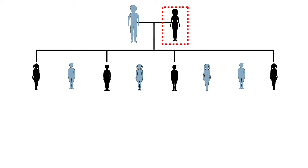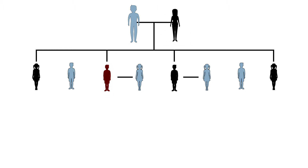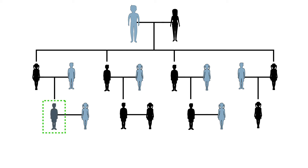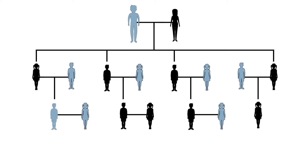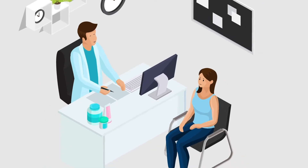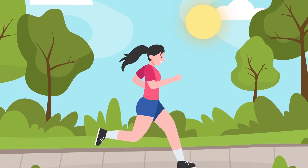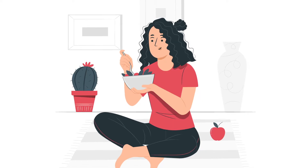If a person in your family has diabetes, you may be at an increased risk for it as well. A family history of certain health conditions can predispose you to them. However, for many health conditions, you can break the chain by taking a few measures when you learn about your predispositions.